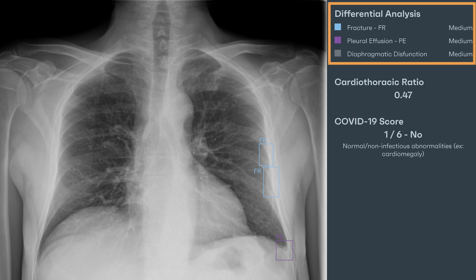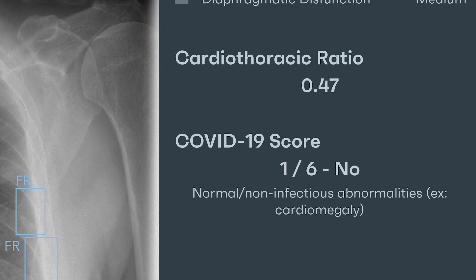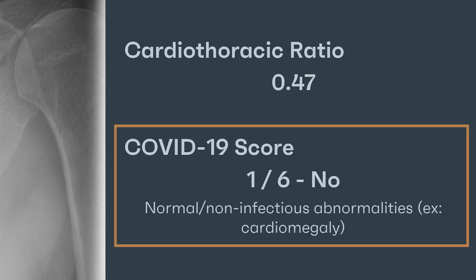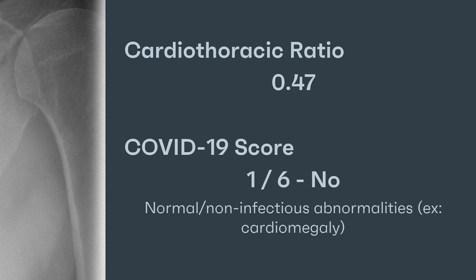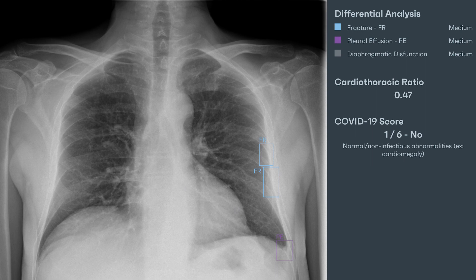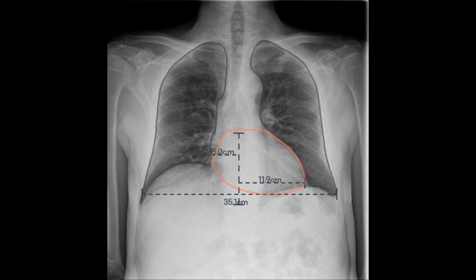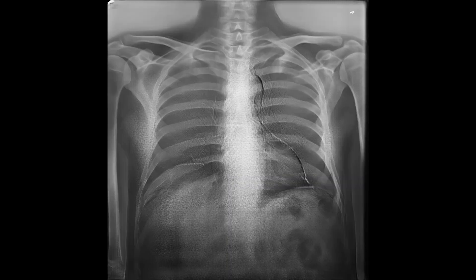Besides identifying and localizing the most common lung pathologies, Rayscape generates a series of additional information essential for a comprehensive pulmonary evaluation. The COVID-19 score is an adaptation of the CORADS score and is an essential screening tool for detecting patients with SARS-CoV-2 infection. To save time, Rayscape automatically measures the cardiothoracic index ratio and is able to generate bone-suppressed and subtracted versions of the original image without the need for double exposure.